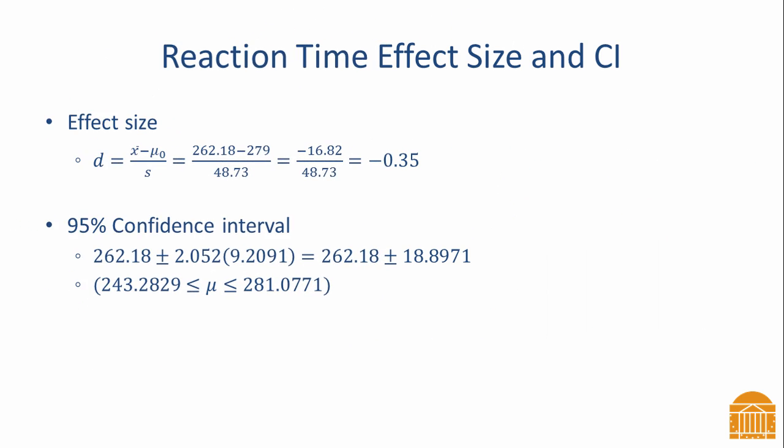Returning to the reaction time example, the effect size is negative 0.35. In other words, the sample mean was 0.35 standard deviations below the value we specified under the null. This effect size is on the small side. The confidence interval indicates that the mean reaction time for graduate students is between 243 and 281 milliseconds with 95% confidence.